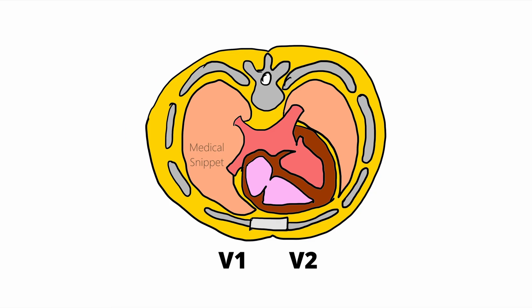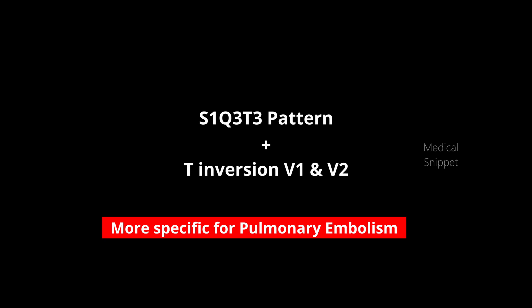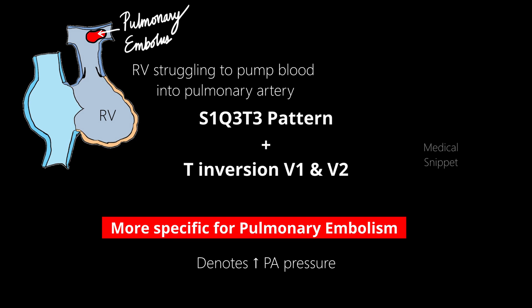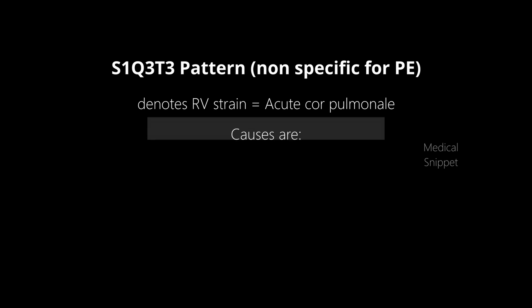As V1 and V2 are placed over the chest, they give a better ECG view of the right ventricle than the limb leads. If T wave inversion is present in V1 and V2, it is more specific for pulmonary embolism and denotes increased pulmonary artery pressure — the right ventricle is struggling to pump blood into the pulmonary artery. So S1Q3T3 is not specific for pulmonary embolism, but if present, we have to check the causes for right ventricular strain.